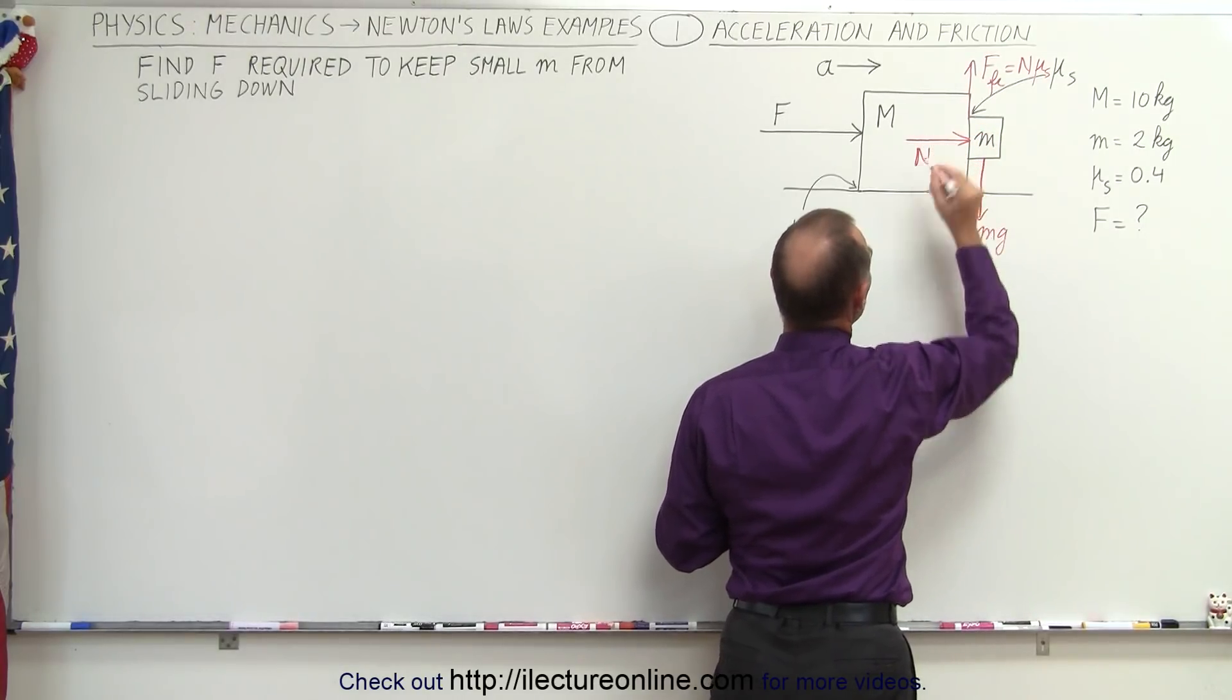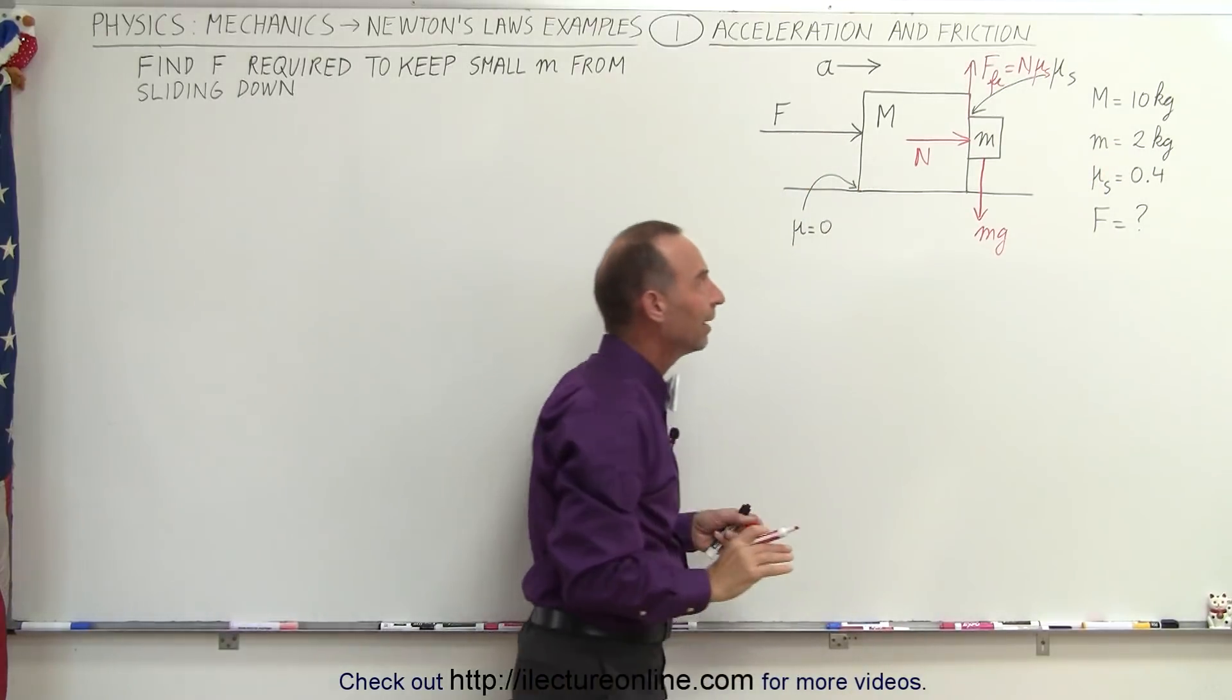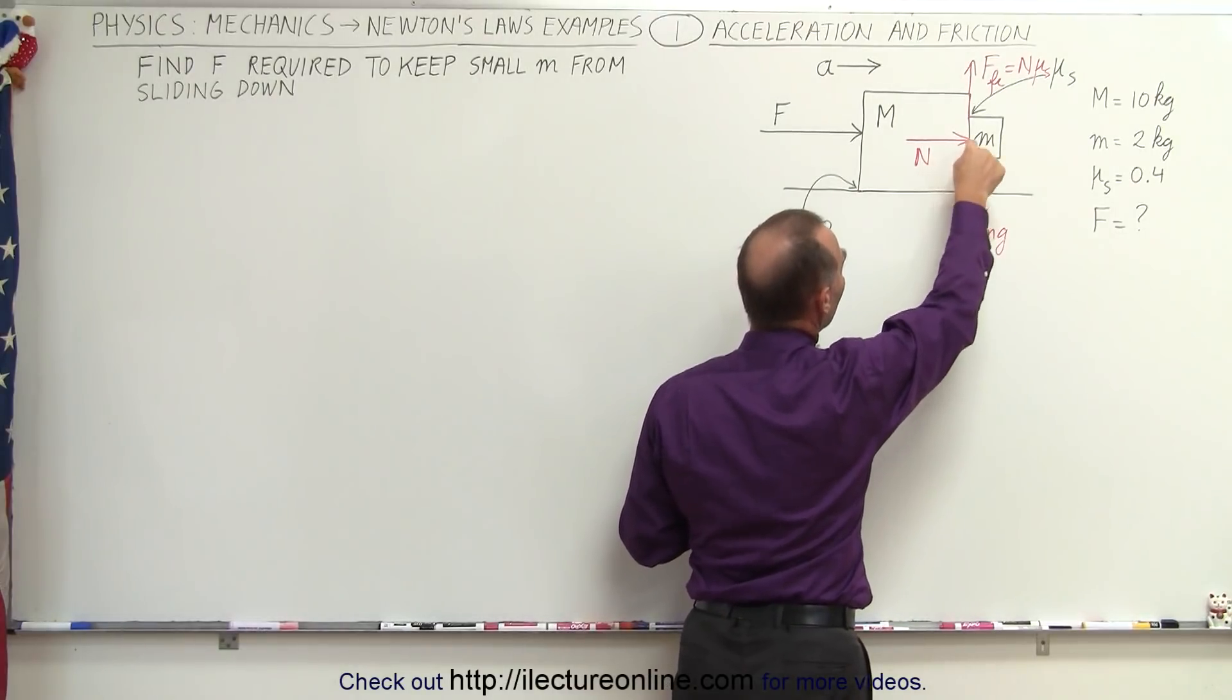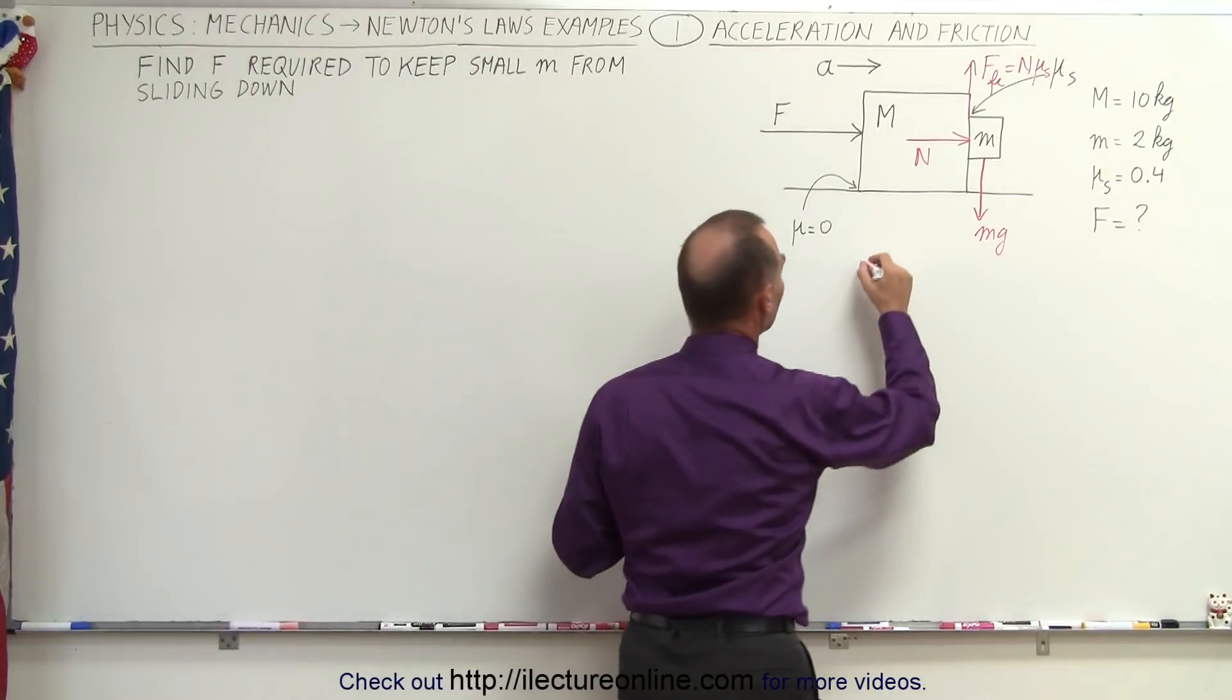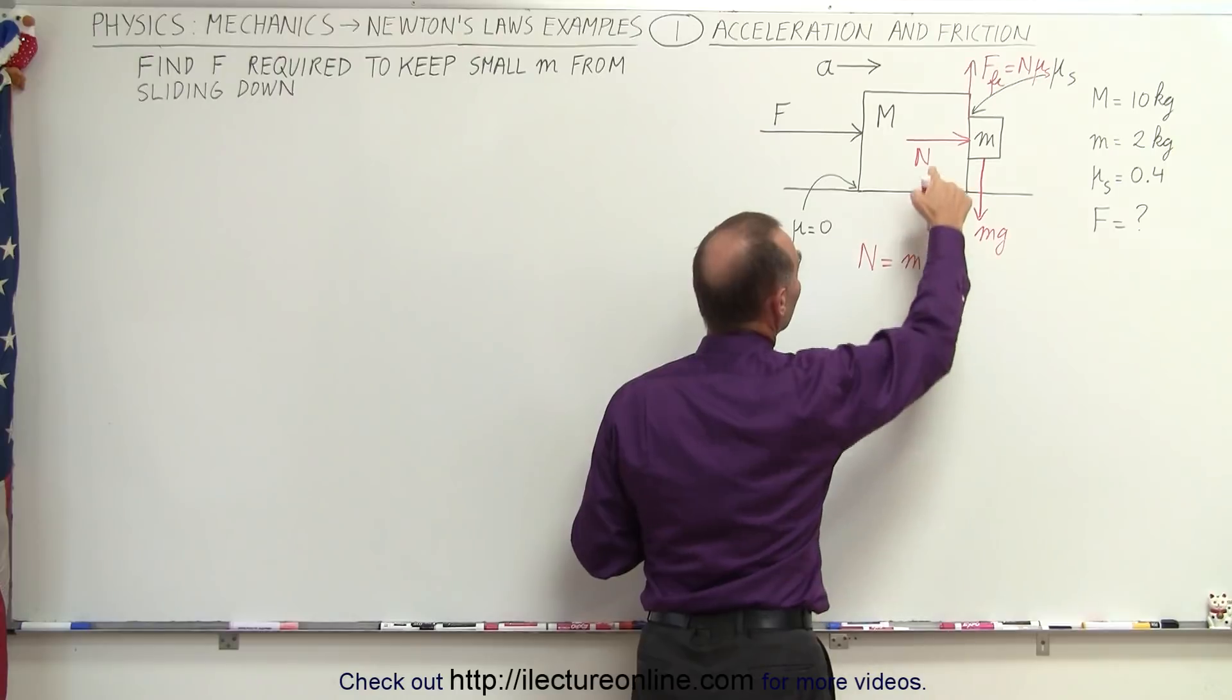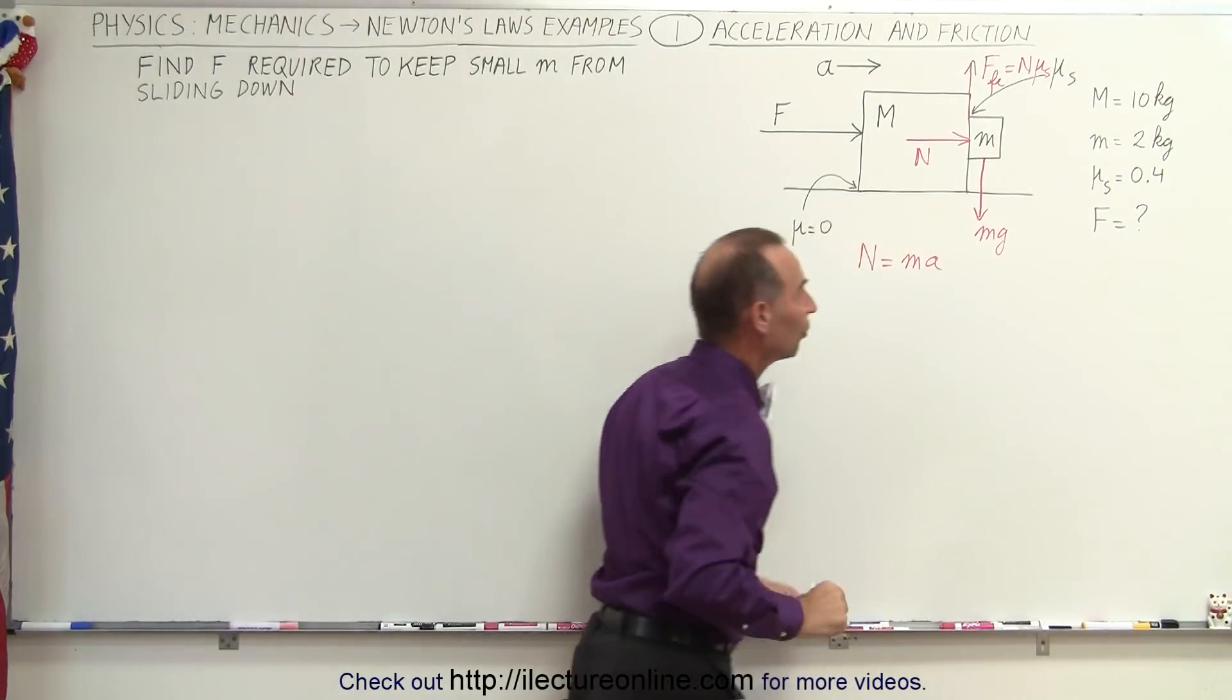So here, there will be a normal force created by this force pushing both blocks to the right, and so the force represents the force of the big block pushing against the small block. And how large is that normal force? That normal force is equal to the mass times acceleration because that normal force is the force that will give the small block the acceleration to the right.